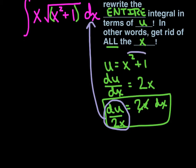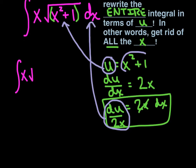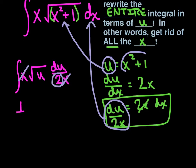We're also going to take this expression and substitute u in for the inner function. So the new integral looks like x times the square root of u times du divided by 2x. The x's cancel, and we pull out a coefficient of one-half out front. So it becomes one-half times the integral of the square root of u du. Now we can celebrate because we have successfully rewritten the entire problem in terms of u — we've gotten rid of all of the x's.